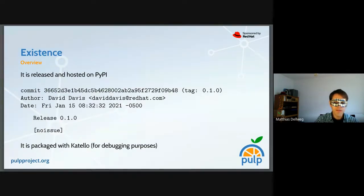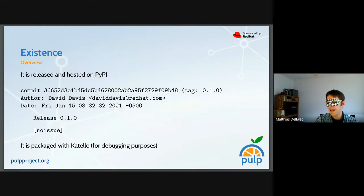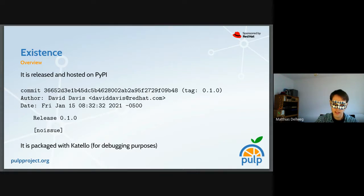One of the important points about the PULP CLI is it exists — and this is different from last year. It is released and hosted on PyPI. The first release happened on Friday, January 15 of this year, and at the moment I think we are at release 0.16.